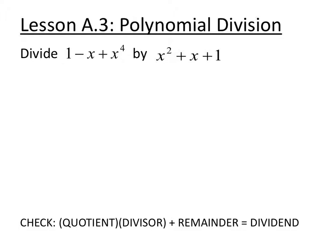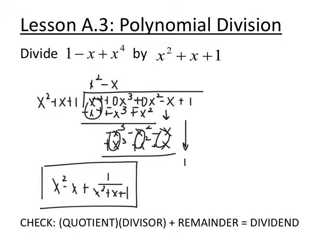Here's one more example. Pause the video and divide 1 minus x plus x to the 4th by x squared plus x plus 1. I highly encourage you to write everything in standard form first. So I rewrote the dividend in standard form with placeholders for x cubed and x squared. What do I have to multiply x squared by to get x to the 4th? Multiply by x squared. x squared times x squared is x to the 4th, times x is x cubed, times 1 is x squared. Subtract all the way through — x to the 4th cancels, leaving negative x cubed minus x squared. Bring down the negative x. What do I have to multiply x squared by to get negative x cubed? I need to multiply by negative x. So you get negative x cubed minus x squared minus x. Distribute the negative — everything cancels. Bring down the 1, and you have a remainder of 1. So your final answer is x squared minus x, with remainder 1 over x squared plus x plus 1. This has been polynomial division.